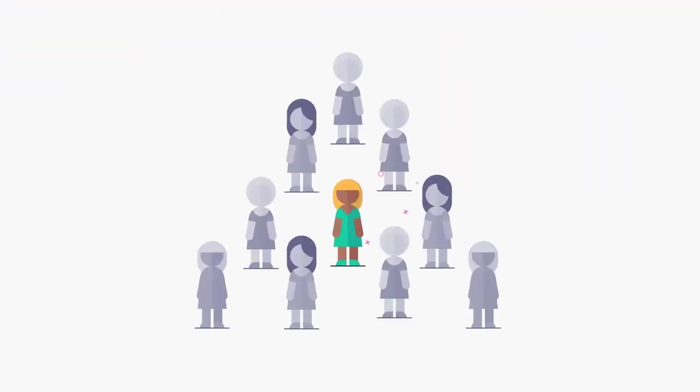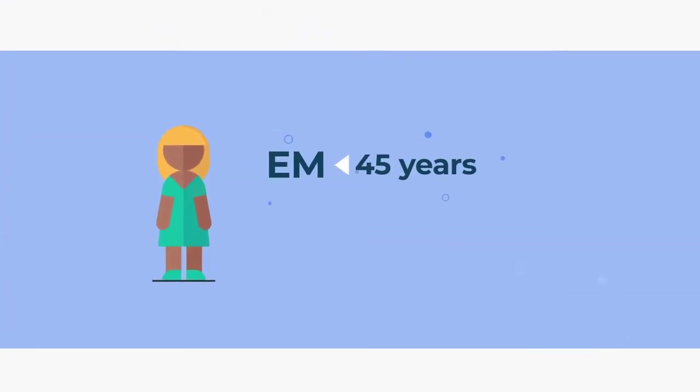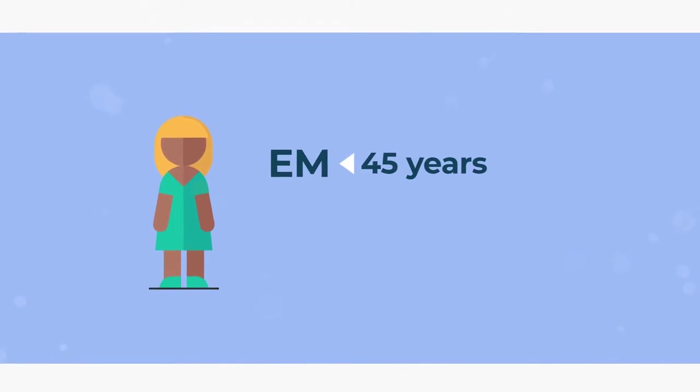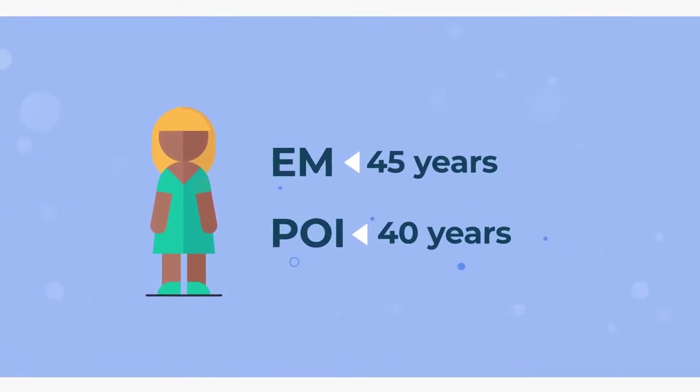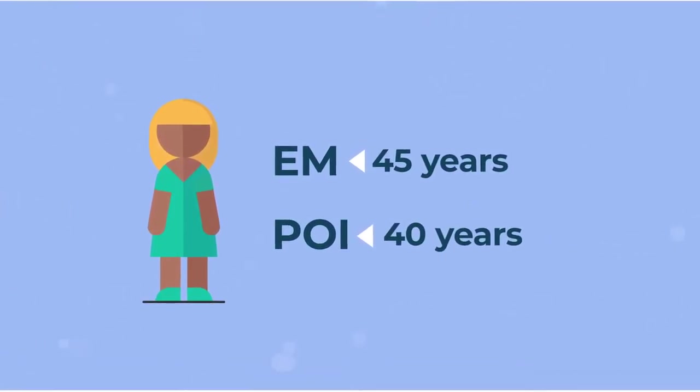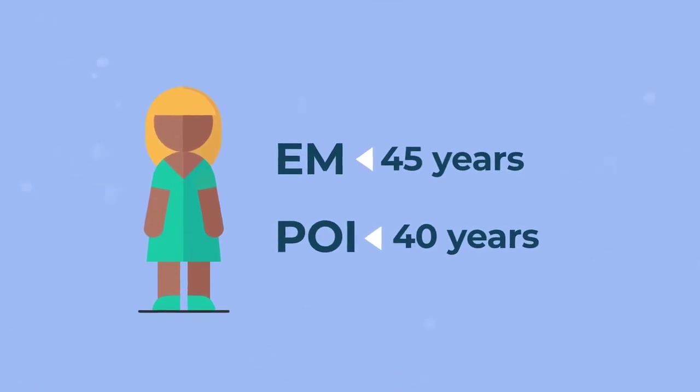For about 1 in 10 women, this occurs much earlier than 50. Early menopause occurs before 45 years, and premature primary ovarian insufficiency occurs before 40 years.